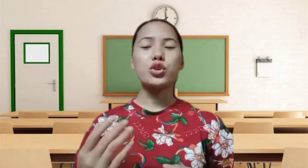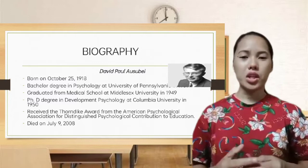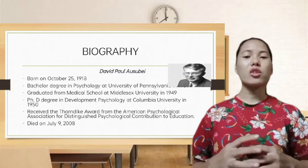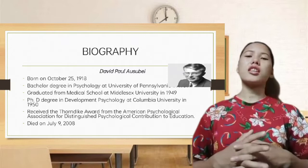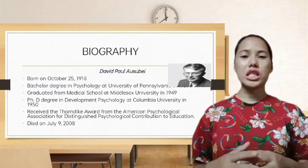Let us know who David Paul Ausubel was. David Paul Ausubel was born on October 25, 1918. He took a bachelor's degree in psychology at the University of Pennsylvania in 1939, graduated from medical school at Middlesex University in 1949, and earned a PhD in developmental psychology at Columbia University in 1950. That same year, he received the Thorndike Award from the American Psychological Association for Distinguished Psychological Contribution to Education.